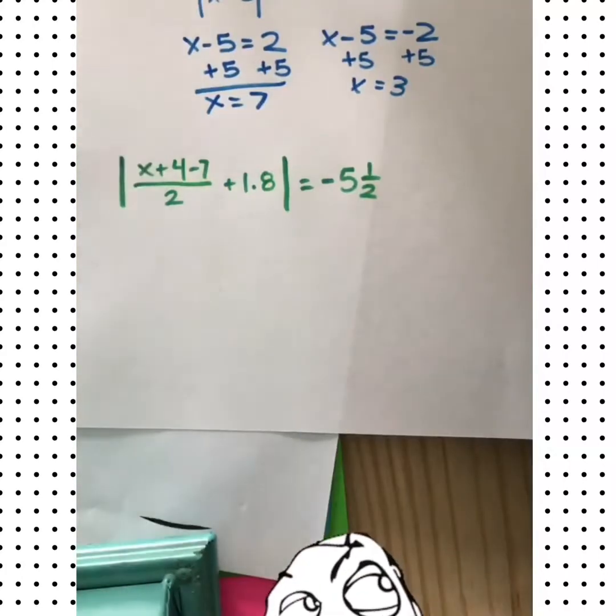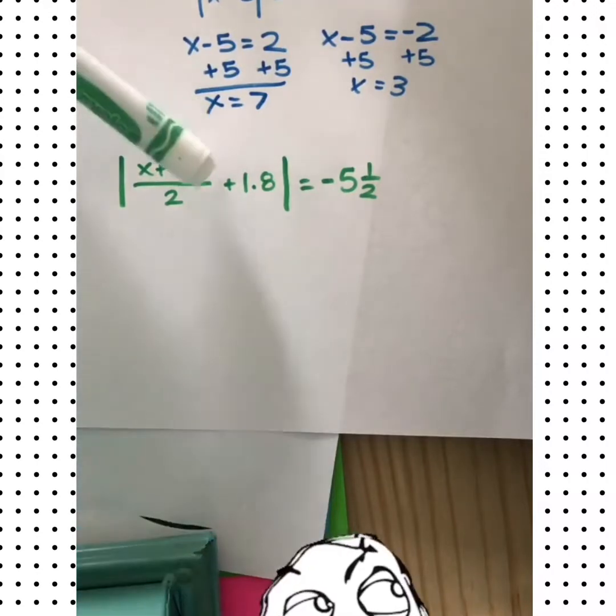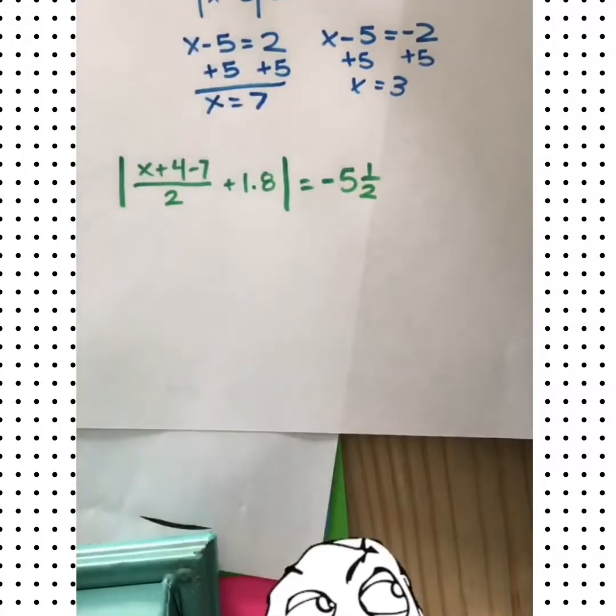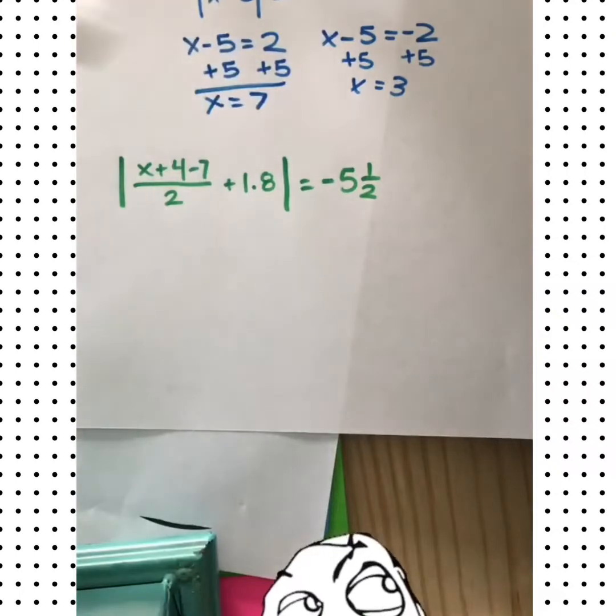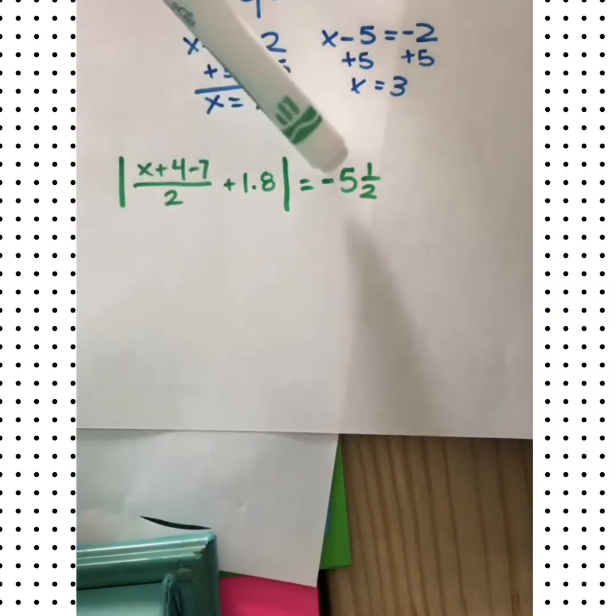Take a look at this one. Do you notice anything before we even start to solve this? Yeah, an absolute value is never going to be negative. So there's no possible way that this has a solution. There's nothing that has an absolute value of any negative number. So without doing any math, you can simply say no solution.